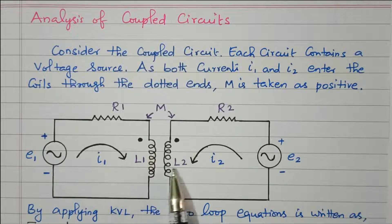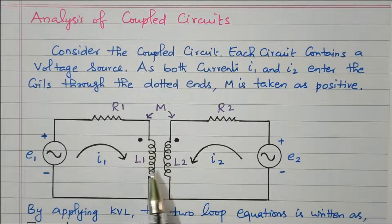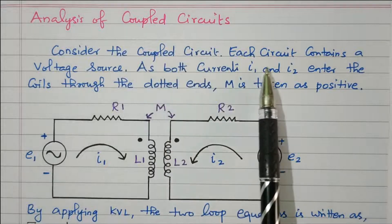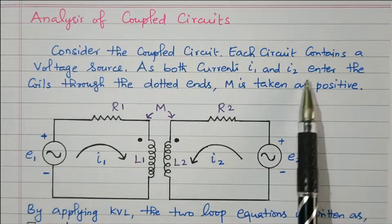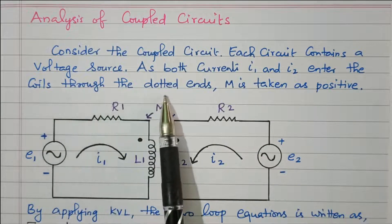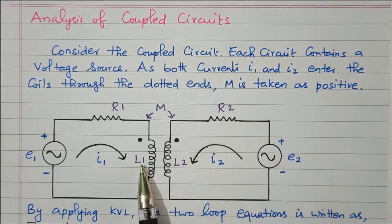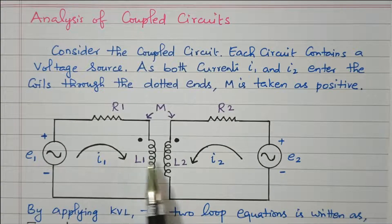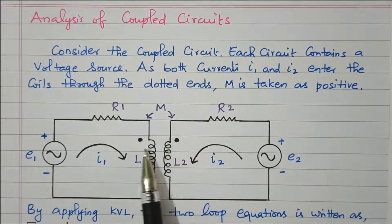Due to these two inductances being magnetically coupled, M is the mutual inductance between L1 and L2. Both currents I1 and I2 enter the coil through the dotted ends, so M is taken as positive. The current enters from the dot in the first circuit, and in the second circuit also the current enters at the dot — so both enter at the dot, and M is positive.